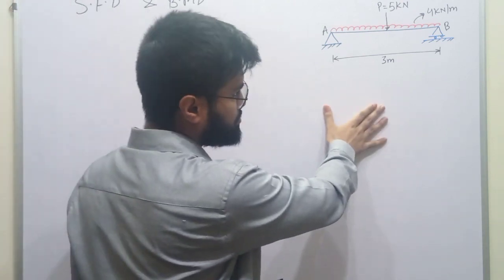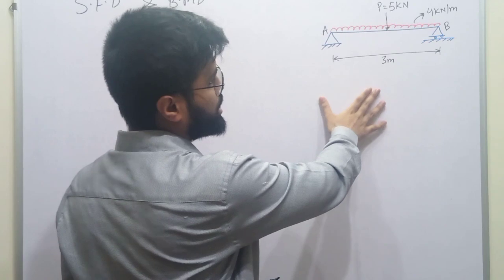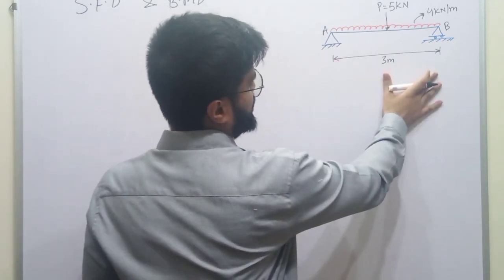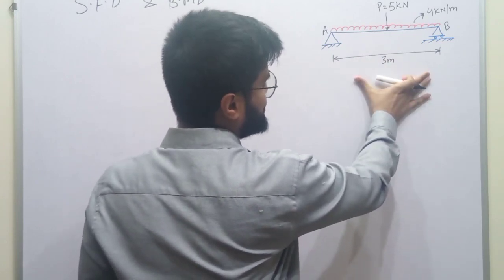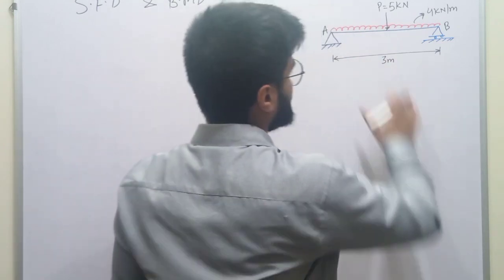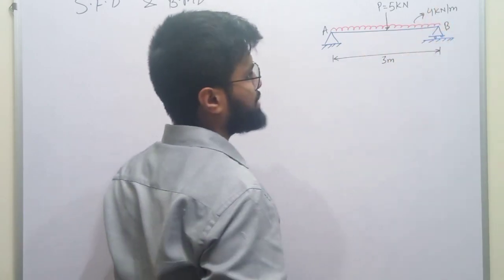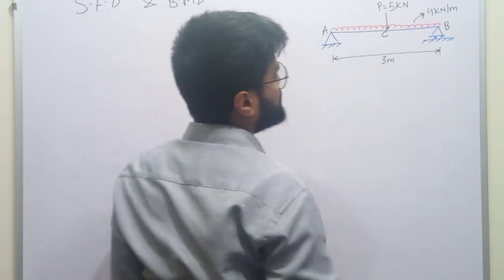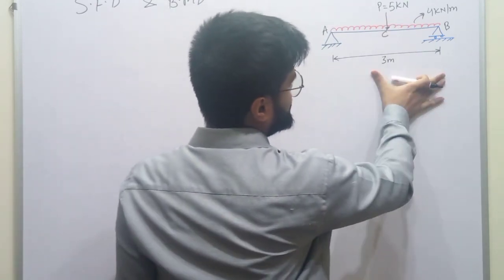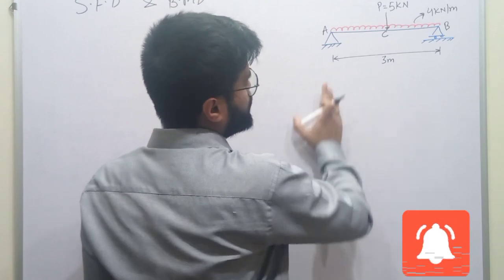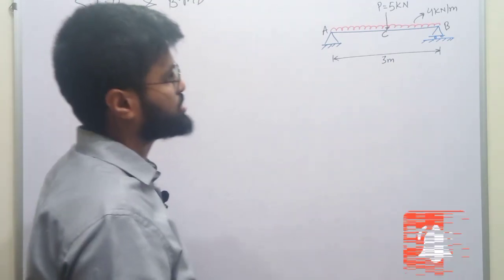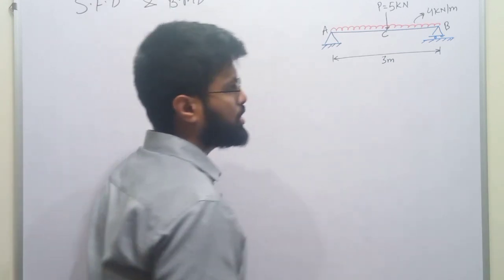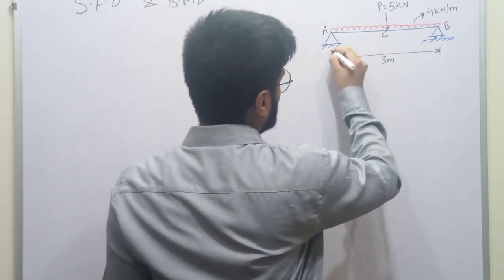यह एक beam दिया हुआ है जो कि simply supported beam है। इस beam के लिए हमको SFD और BMD बनाना है। Beam की total length 3 meter है, इसके ऊपर UDL है जो की 4 kN per meter है, और point load दिया हुआ है at the center of the beam जो की 5 kN है। सबसे पहले हम लोग इसके लिए reactions निकाल लेंगे।